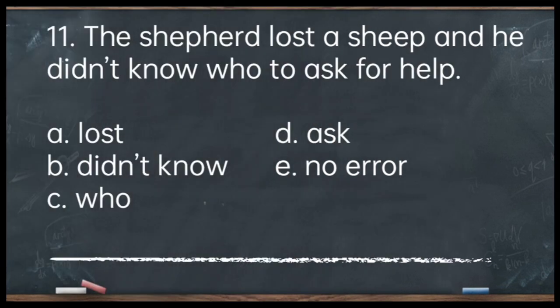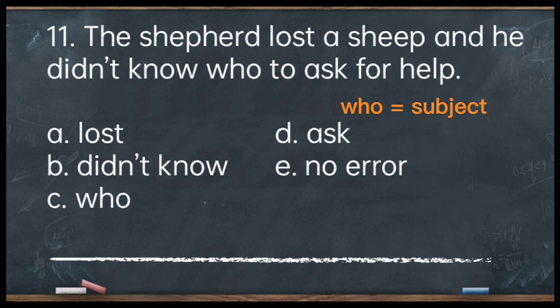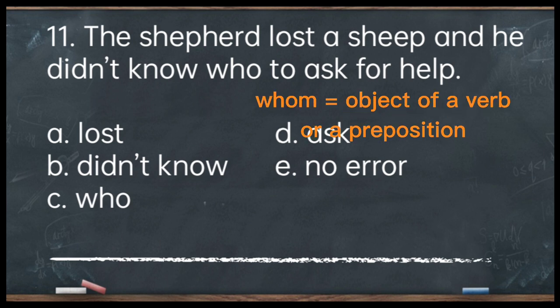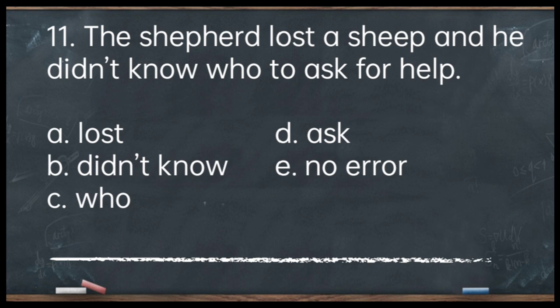Number 11. The shepherd lost a sheep and he didn't know who to ask for help. A. Lost. B. Didn't know. C. Who. D. Ask. E. No error. The answer is letter C — 'who.' Here 'who' is used as a relative pronoun, not interrogative. Since we have an object of the preposition — the shepherd asked for help from whom — it should be 'whom.' Corrected: The shepherd lost a sheep and he didn't know whom to ask for help.